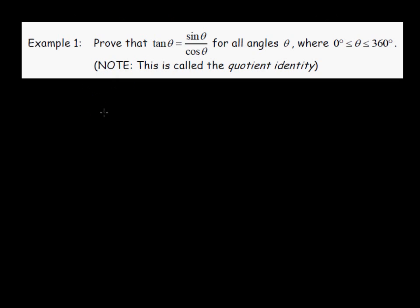Trigonometric identities is all about proving that the left side of a statement is equal to the right side of the statement, and that statement involves trigonometric ratios. We're going to start by proving a couple of what we call basic trig identities, and then we're going to use those basic ones in order to prove some more complex trig identities.